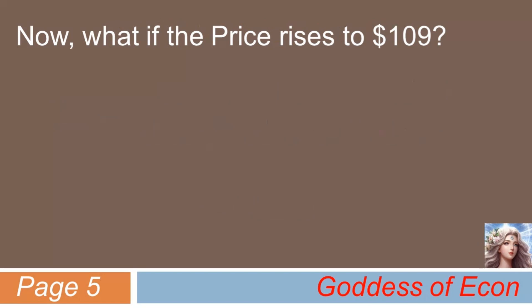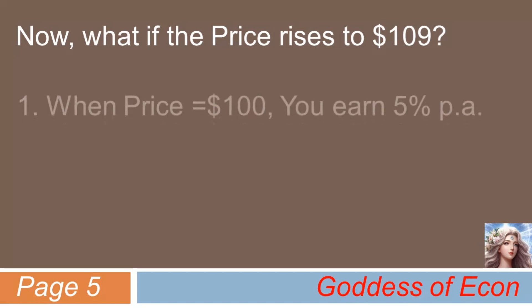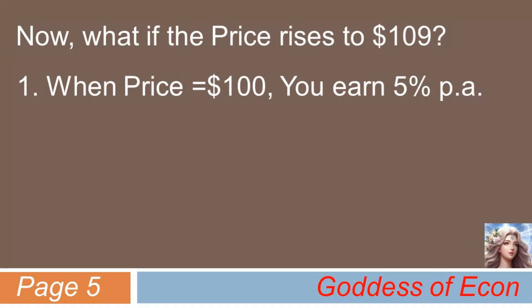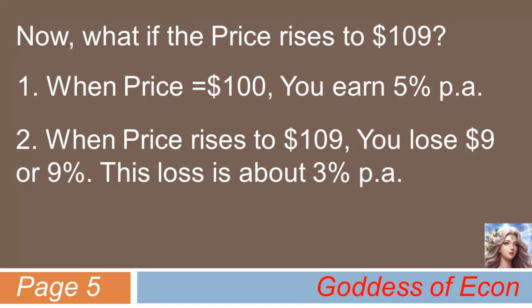Now, let's consider the case where the price of the bond becomes higher than before. For example, what if the price rises to $109 from par? The thought process you need to undergo should be the same as before. First, when price equals $100, you earn 5% per annum. Second, when the bond's price rises to $109, you lose $9 or 9%. In annual terms, this loss translates to about 3% per annum. Therefore, the new YTM should come out to be 3% lower than when it was priced at par. So, we can guess that now the YTM is about 2%.